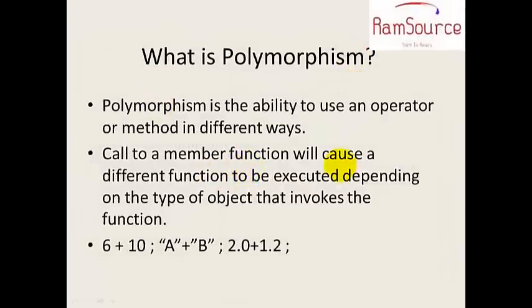What is polymorphism? Polymorphism means one name, many forms — the same operator or method operates differently based on the technical context.